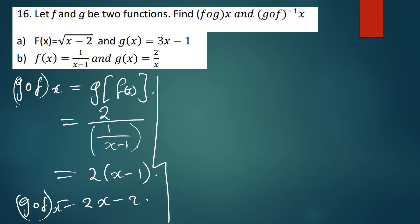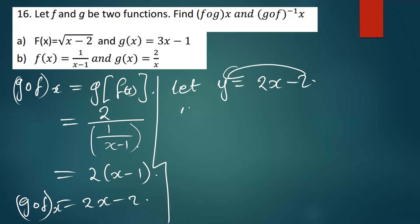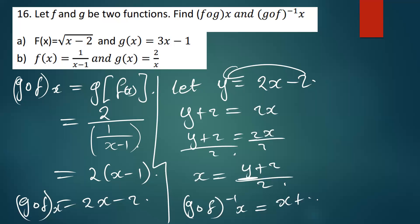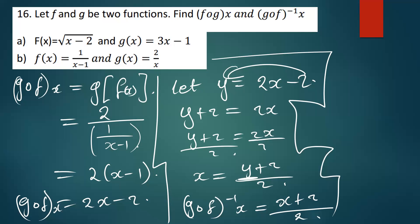Now we find the inverse of g of f of x. Let y equal two x minus two. Making x the subject: take two to the other side to get y plus two equals two x. Divide both sides by two to get x equals y plus two over two. So g of f inverse of x is therefore equal to x plus two, all divided by two. That is exactly what you're supposed to do.